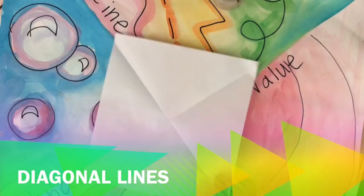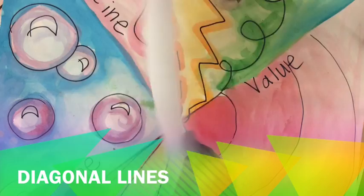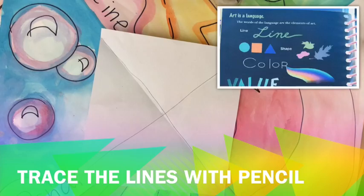These are called diagonal lines. Inside of each line I wrote one of the elements of art with my pencil. For a pinwheel we have to decorate both sides of the paper. So on the front side we are going to be using the elements of art.